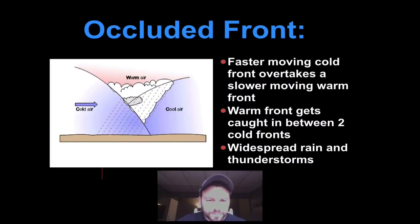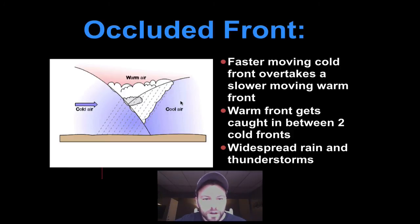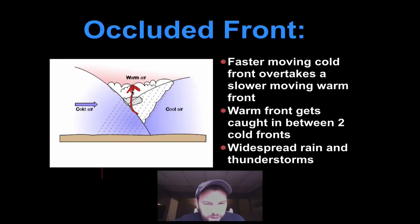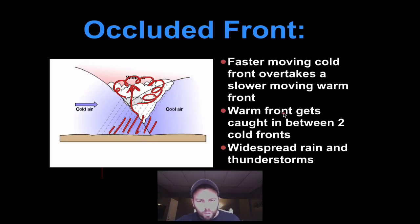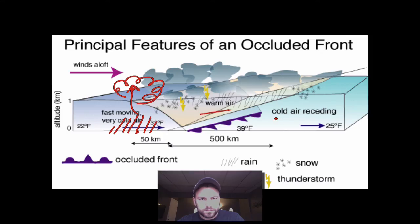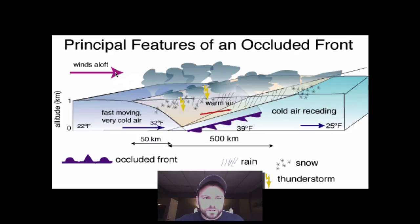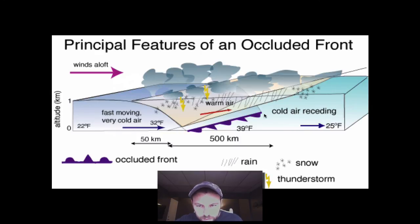Then we have an occluded front — our fourth and final front. In an occluded front, cold air catches up to cool air, and what happens is it forces our air up right in between the boundary. These are our cloud formations, and notice we have the rain right here at the front. That warm air gets caught in between those two cool fronts. The diagram shows the fast-moving cold air on one side, cold air on the other, and the warm air stuck right in the middle — that's where we have our precipitation.